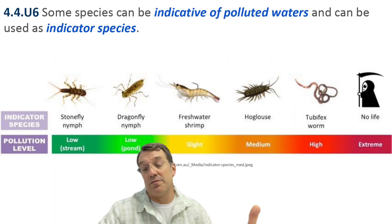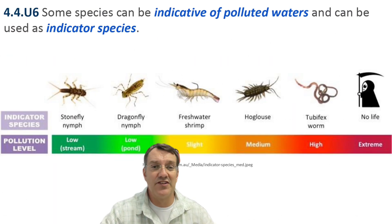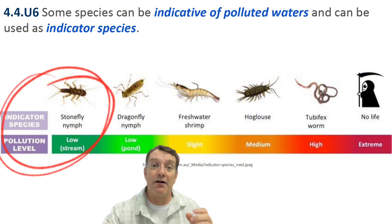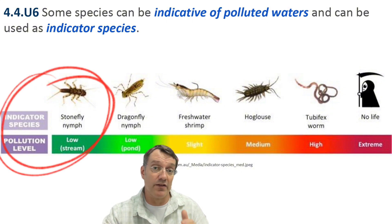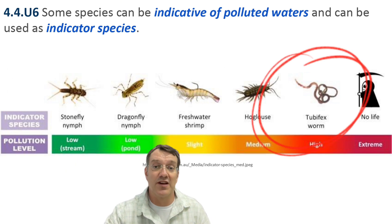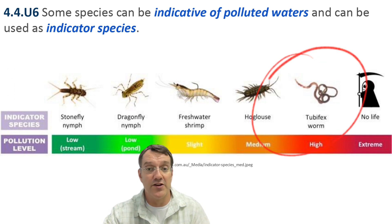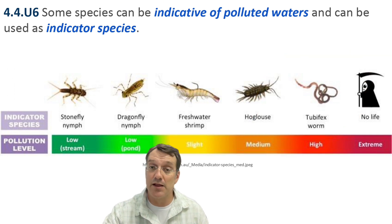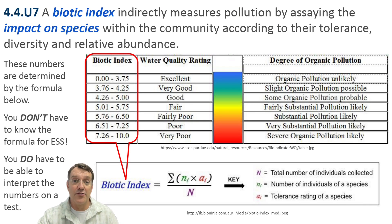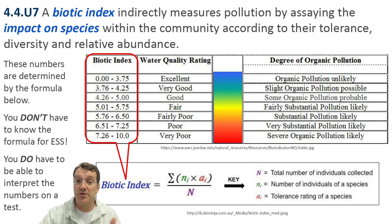Nature provides us with biological indicators of water quality through certain sensitive species. This diagram shows how different organisms tolerate different levels of pollution. Stonefly nymphs require very clean water, so we only find them in clean water and not in heavily polluted water. Tubifex worms, however, can survive in really heavily polluted conditions, so their populations tend to be lower in clean areas where they're out-competed by other organisms. We can quantify these biological indicators using what's called a biotic index.